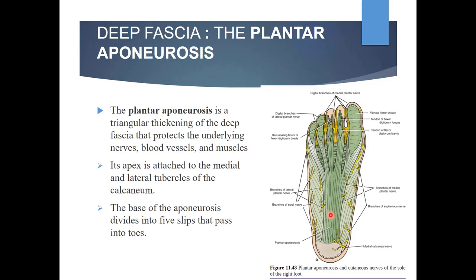Now the deep fascia forming the plantar aponeurosis — see here in this diagram. This is the plantar aponeurosis. It is a triangular thickening of the deep fascia that protects the underlying nerves, blood vessels, and muscles. Its apex is attached to the medial and lateral tubercles of the calcaneum. The inferior surface of the calcaneum has three tubercles: one anterior tubercle and two posterior tubercles — one medial and one lateral. The base of the aponeurosis divides into five slips that pass into the toes.